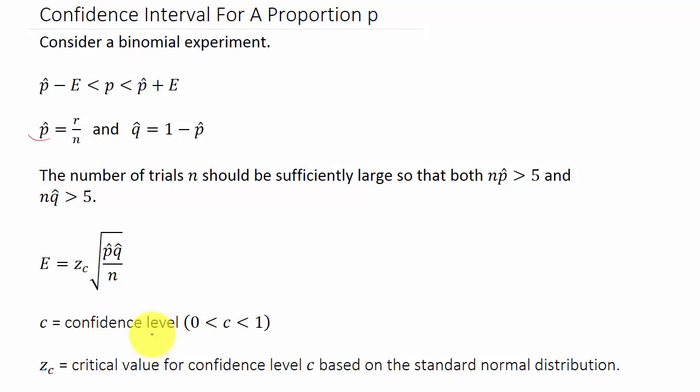C is our confidence level, and Z sub C is the critical value for confidence level C based on the standard normal distribution. Basically, we just have to find all of this and plug it into this to get our confidence interval.